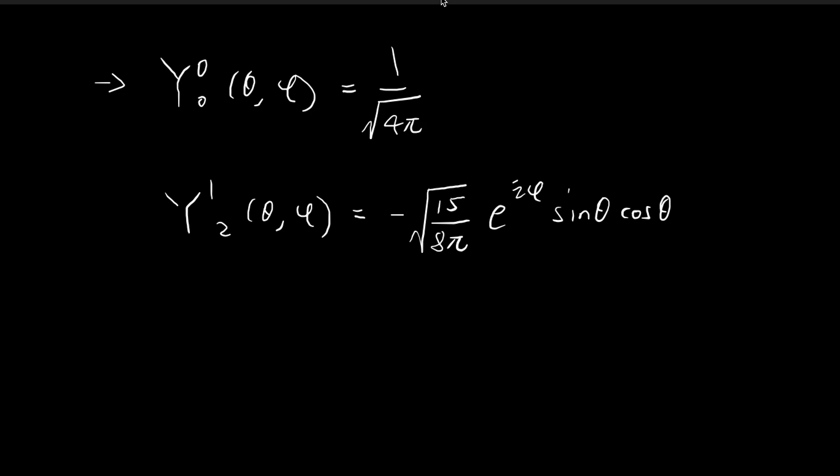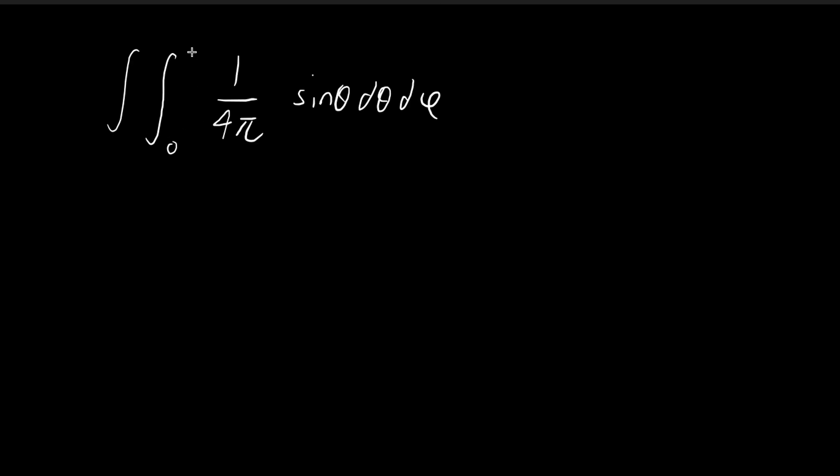And then for the domain, theta goes from 0 to pi, while phi goes from 0 to 2 pi. And so this is the integral that we're going to have to deal with. So first of all, we can integrate out the d phi's, there are no phi terms here, so we just get a 2 pi. And I can just pull this out, this is just a constant, 4 pi. And so in the end, we have an integral of sin theta from 0 to pi.